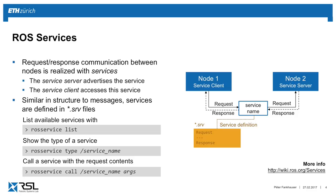In the console, you can use various commands to analyze and play around with services. For example, you can do 'rosservice list' to list all available services provided by your nodes. You can show the type of a service with 'rosservice type' and then the service name. Very importantly, from the console, if you want to check if the service server works properly, you can call a service by typing 'rosservice call', then the service name, and make sure you use the tab button so it auto-completes all the arguments. Then you can type in the arguments.